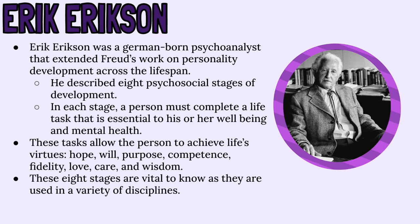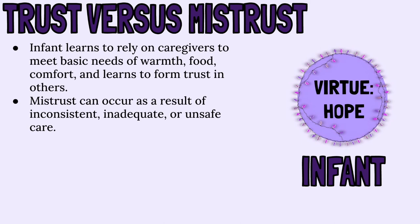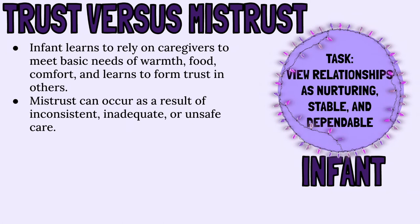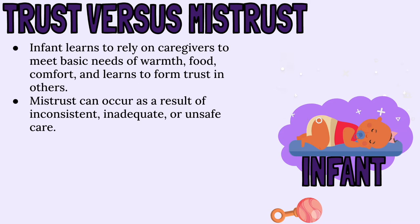Starting with trust versus mistrust. The first stage of development, trust versus mistrust, is the stage of development for infants. Their virtue is hope. Their task for development is to view the world as safe and reliable, and to view relationships as nurturing, stable, and dependable. In this stage, the infant learns to rely on their caregivers to meet their basic needs of warmth, food, and comfort, and learns to form trust in others. If the infant receives inadequate care, inconsistent care, or care that is simply not safe, this can result in mistrust.